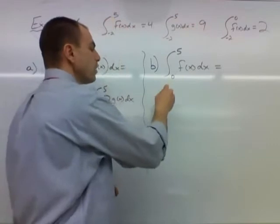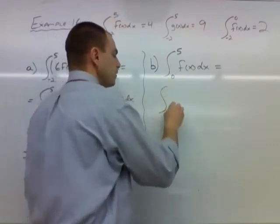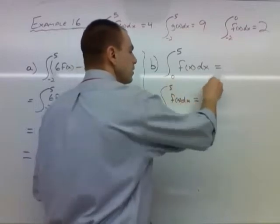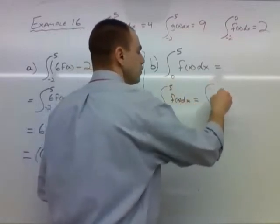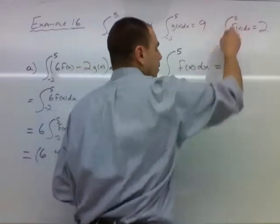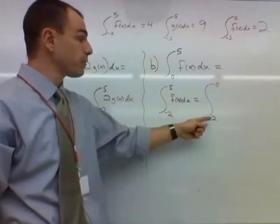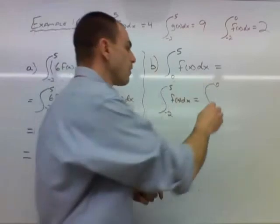So what do we know here? We know that if we go from negative 2 all the way to 5 of f(x)dx, that's going to be equal to the integral from negative 2 to a cutoff point. Then our cutoff point is going to be 0. So we're not going from negative 2 all the way to 5. We're going from negative 2 just to 0 of f(x)dx.